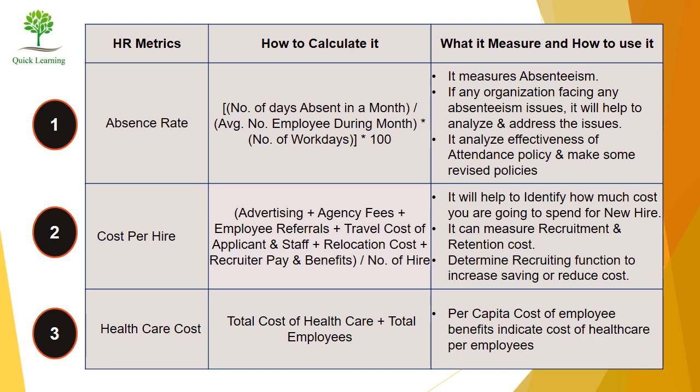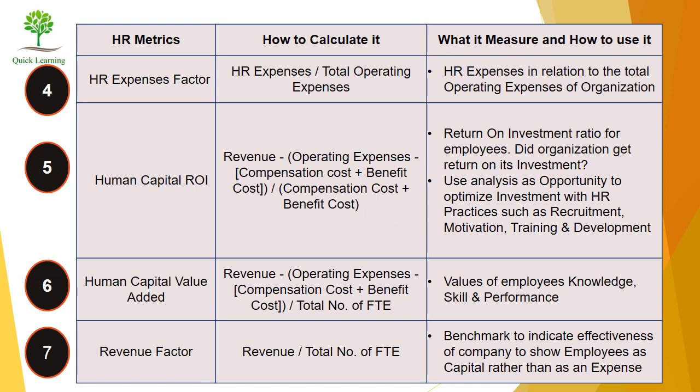Recruitment and retention costs are also measured here. Third, Healthcare Cost. Total cost of healthcare divided by total employees — this indicates the cost of healthcare per employee. Fourth, HR Expense Factor. Its formula is HR expenses divided by total operating expenses. This tells us HR expenses in relation to the total operating expenses of the organization.